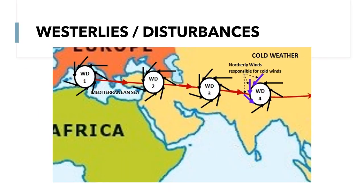The second factor favoring the distribution of locusts to the Indian continent is the westerlies, or western disturbances. Western disturbances are east-flowing winds from the western region — winds flowing from Europe to India, from west to east. This favors the travel of locusts, allowing them to spread more easily from the African deserts to the Saudi Arabian desert and then onward. If you want more detail on westerlies, refer to the NCERT geography sections.